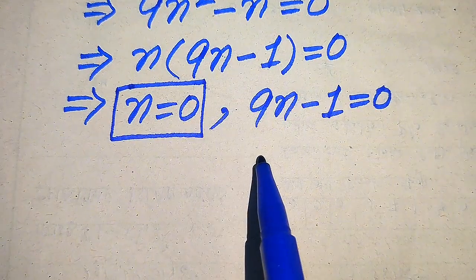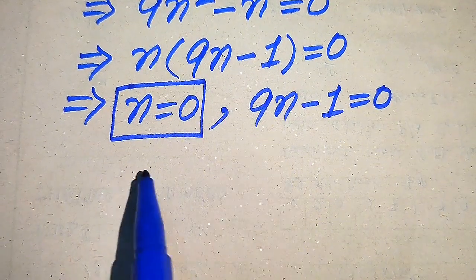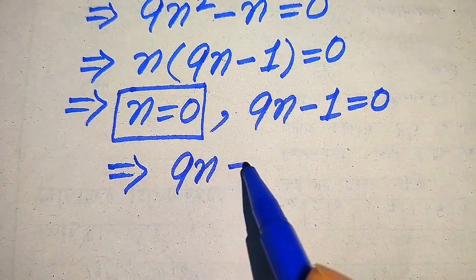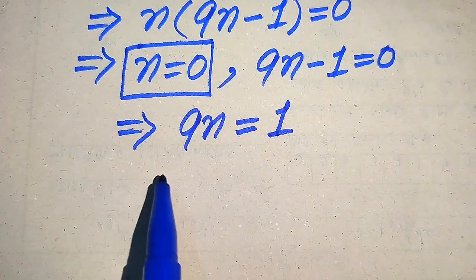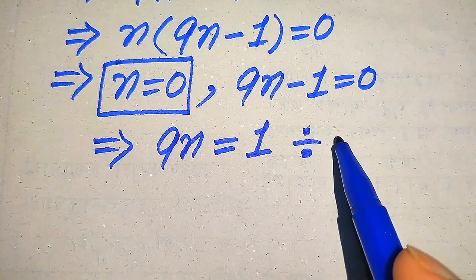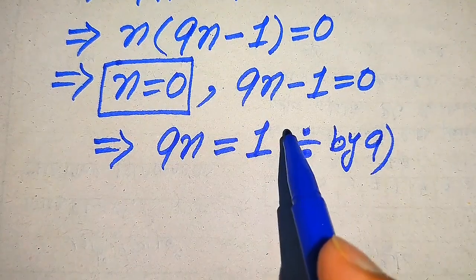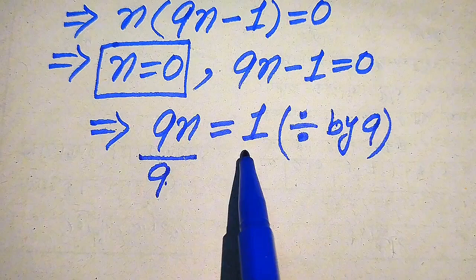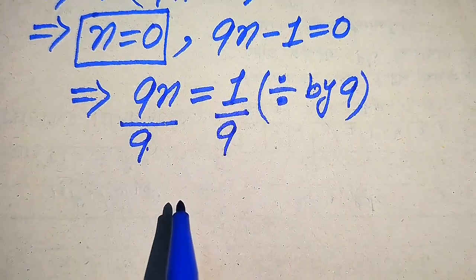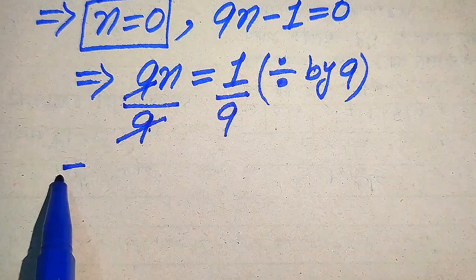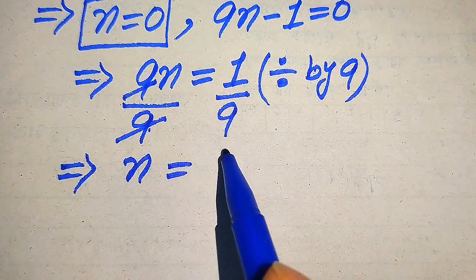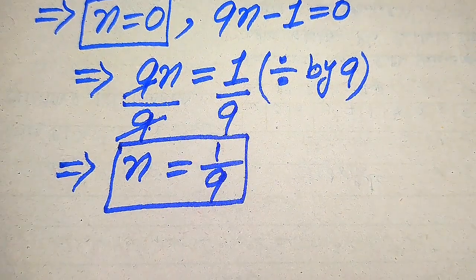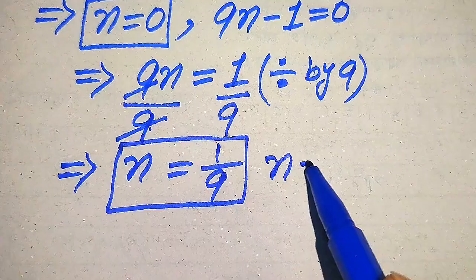So n equals 0 is our first root of the given equation. From the second case, 9n minus 1 equals 0, we move minus 1 to the right-hand side to get 9n equals 1. Dividing both sides by 9, the 9s cancel and we get n equals 1 over 9. So this is our second root.